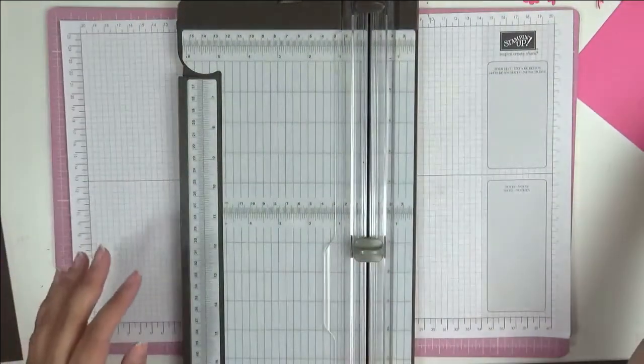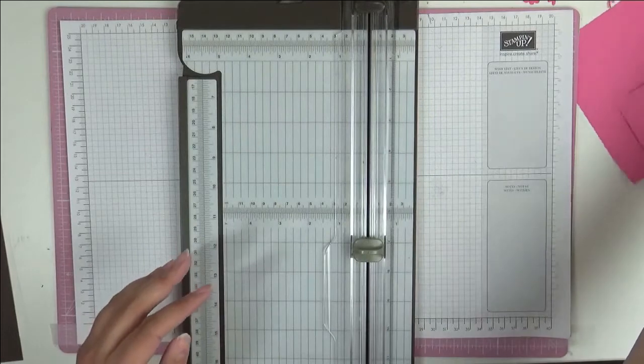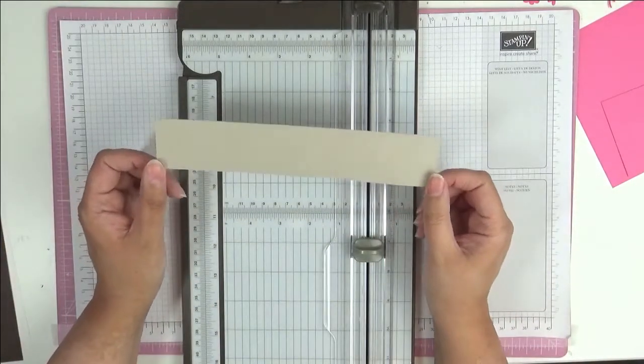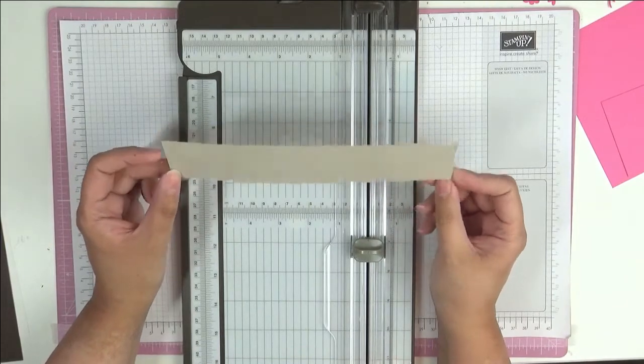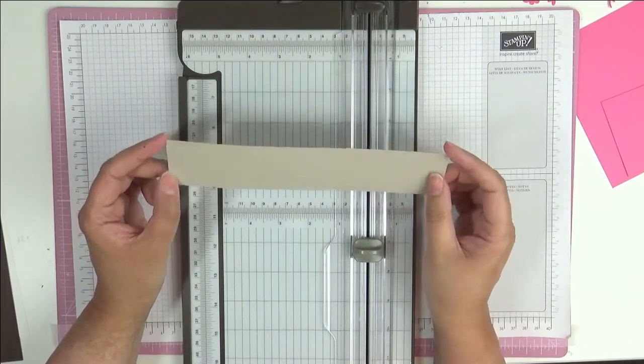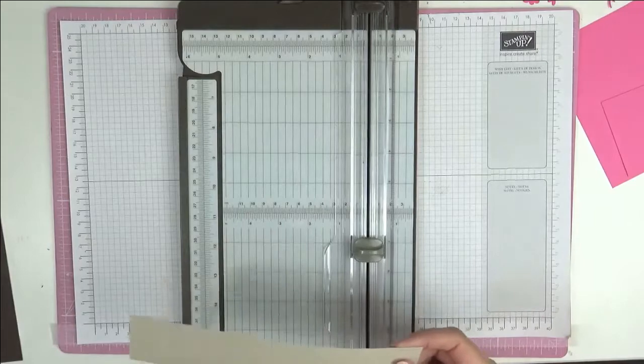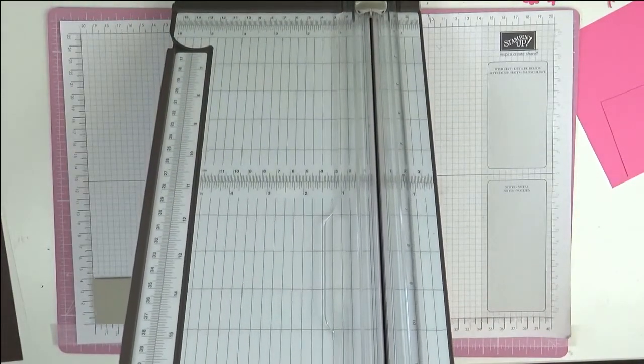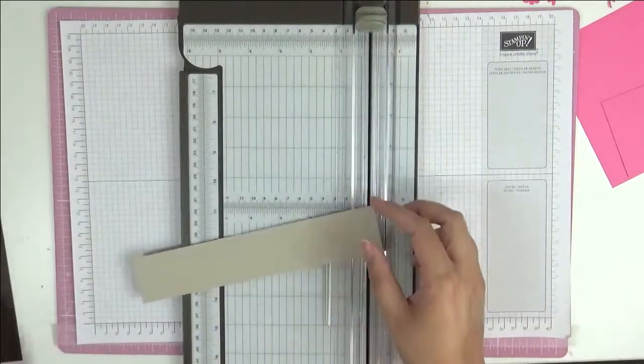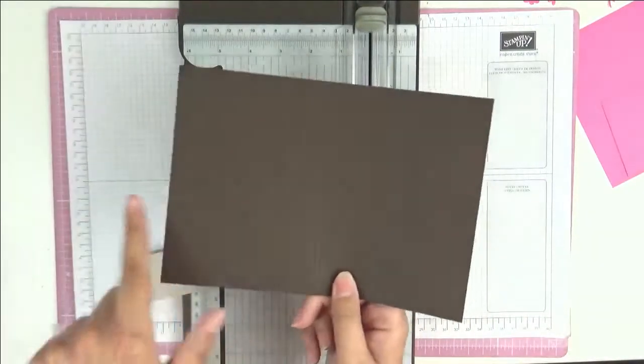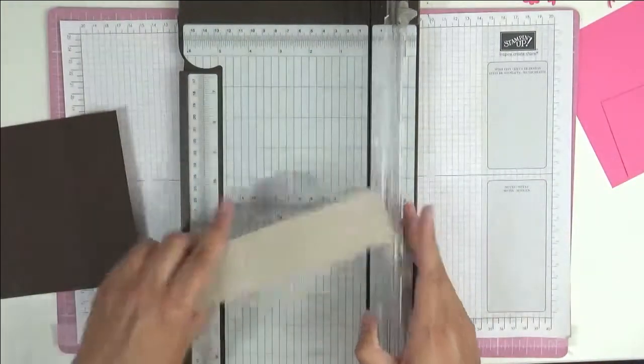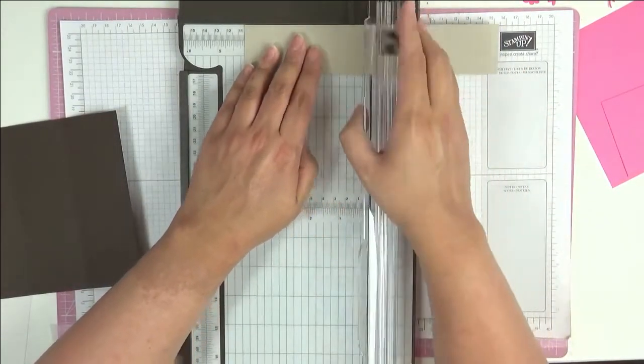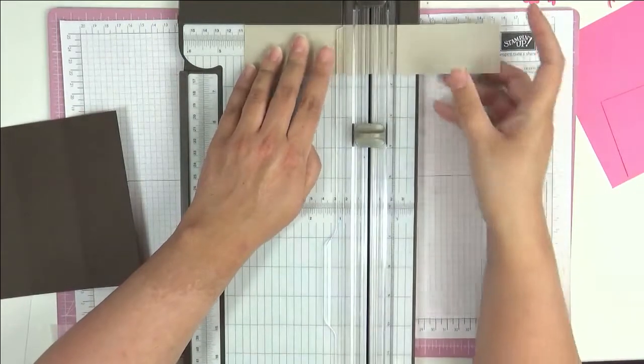We've got a piece here of Sahara Sand and this measures again the full width of an A4 sheet, so this should be 21 centimeters. Let me just check here on my grid paper. Yeah, 21 centimeters, which is the full width of this piece of paper here.